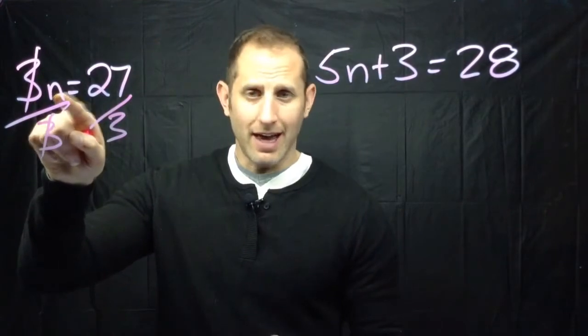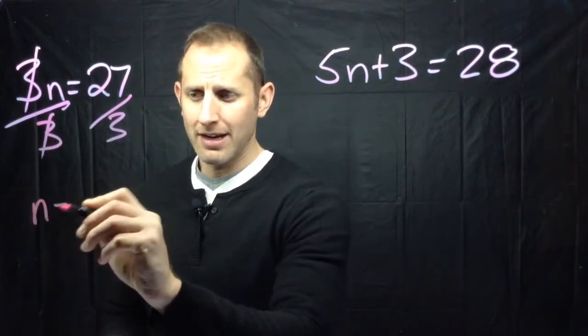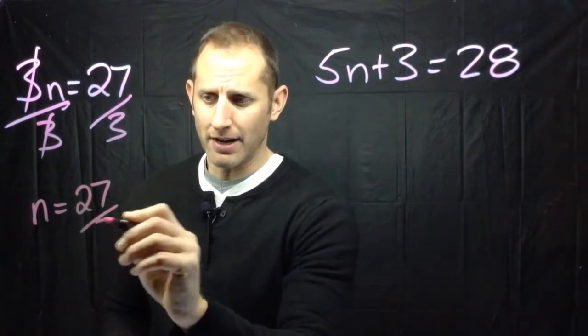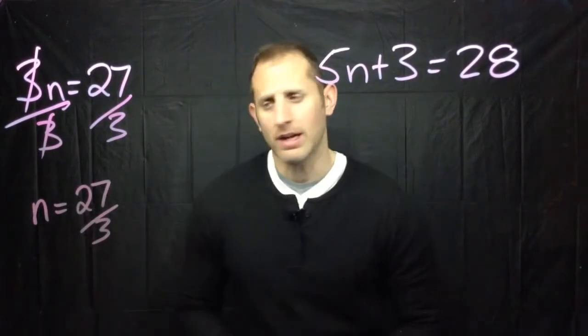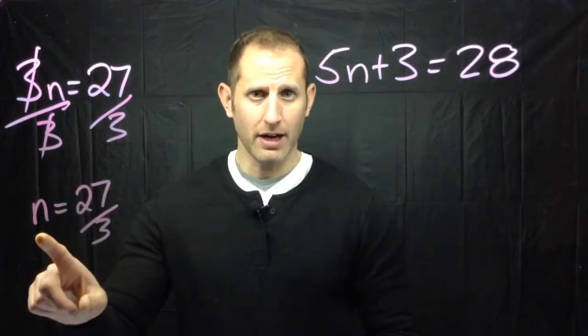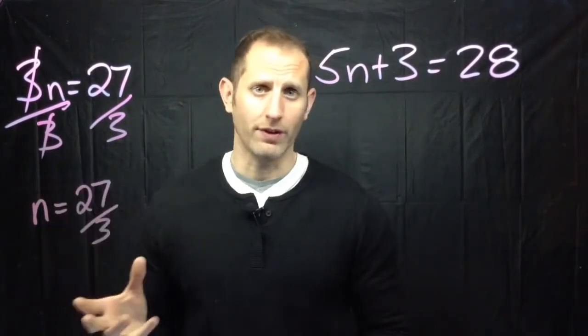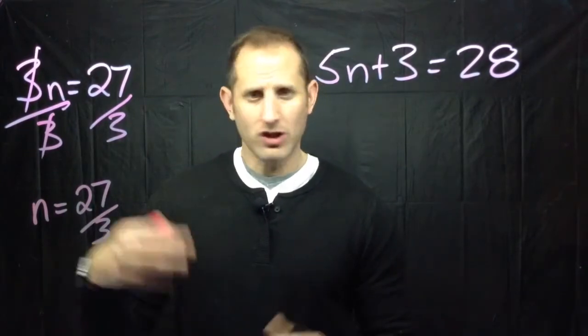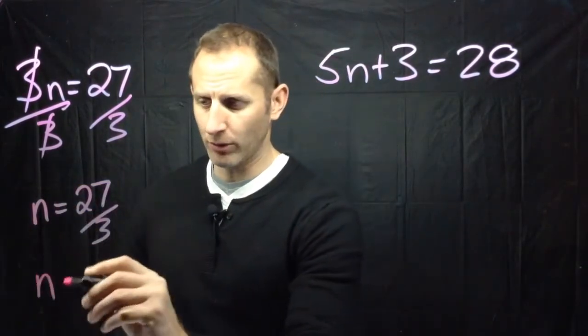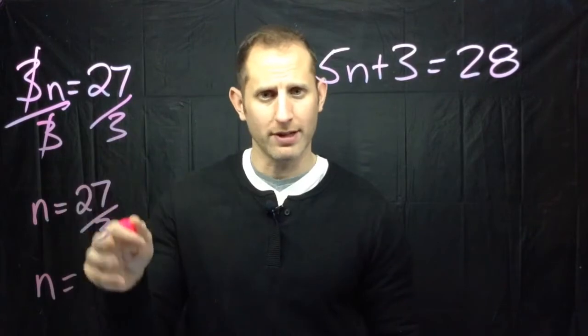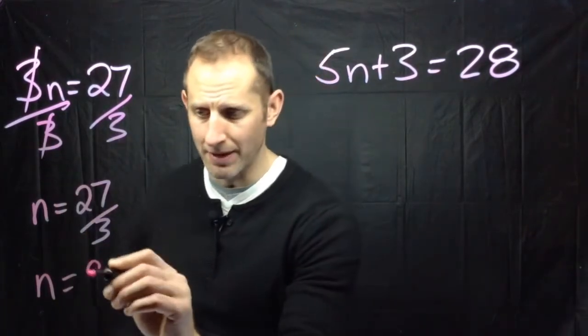That allows me to isolate n. So I'm just going to rewrite this. n is equal to 27 divided by 3. And now what you can see here is I have my variable on one side and I've got a couple of numbers that I can work with on the other side as well. So if I just did the math essentially what I'm looking at is n is equal to 27 divided by 3. n has to be 9.